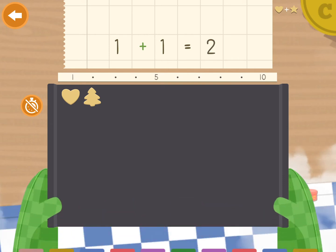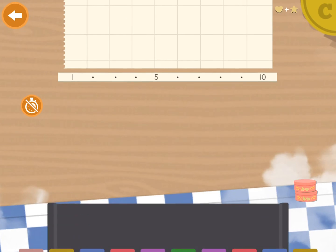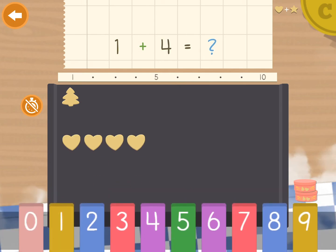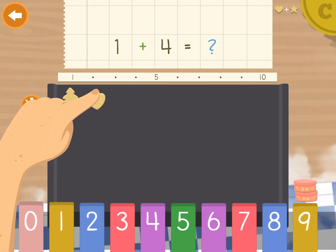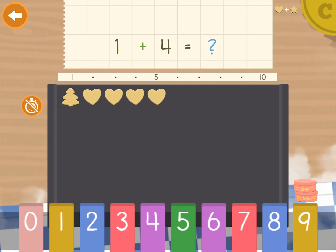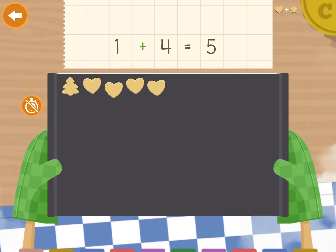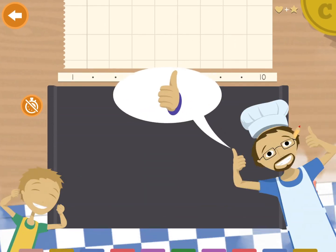Here's another example. 1 plus 4. I have one cookie. You have 4. And you give them to me. So how many do I have now? Let's count them. 1, 2, 3, 4, 5. Yes, correct.